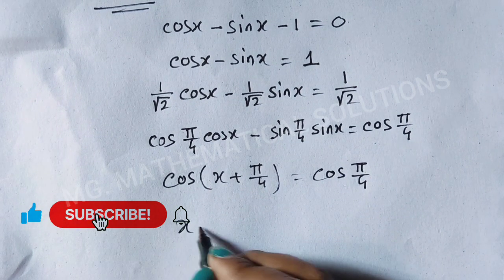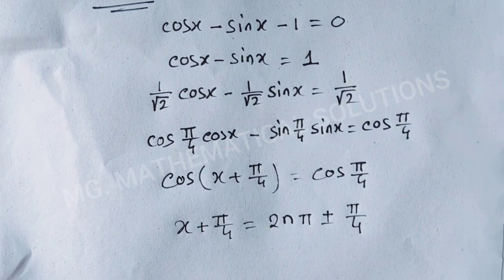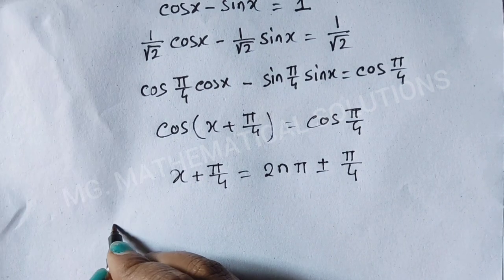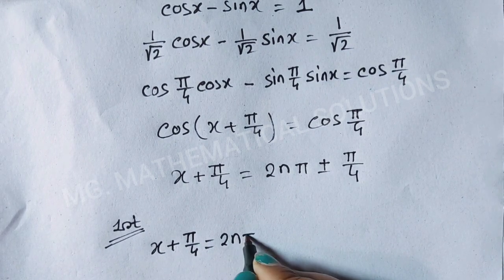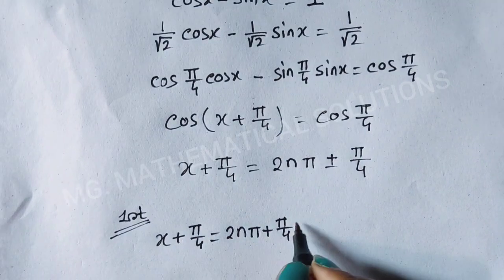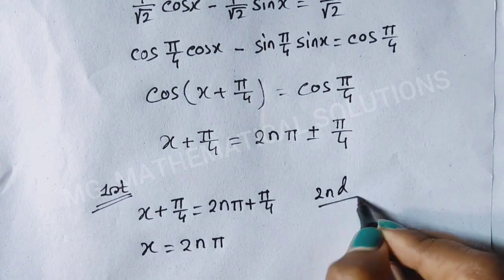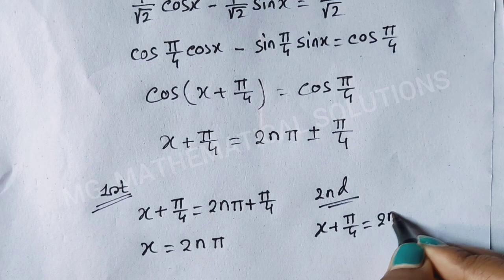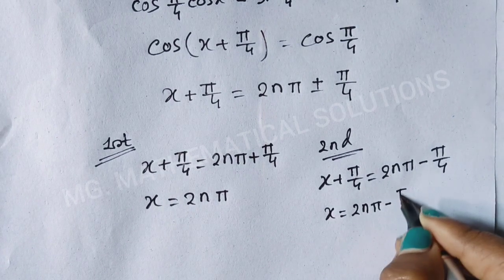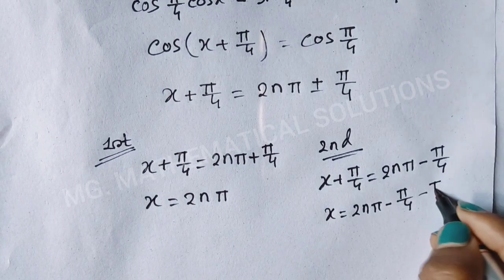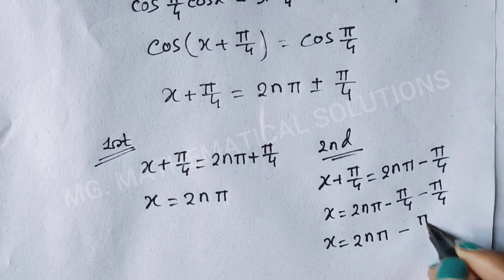So x + π/4 = 2nπ ± π/4. This gives two sub-cases: first, x + π/4 = 2nπ + π/4, so x = 2nπ; second, x + π/4 = 2nπ − π/4, so x = 2nπ − π/4 − π/4 = 2nπ − π/2.